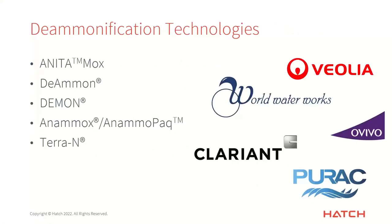There are a number of different deammonification technologies available in the wastewater market. Various companies offer technologies that create an Anammox-friendly environment, many designed specifically for side stream applications to handle those very high ammonia concentrations and do that shortcut nitrification then denitrification directly to nitrogen gas.